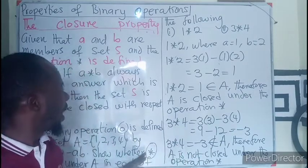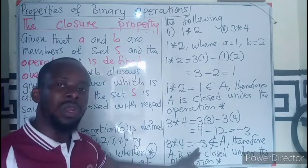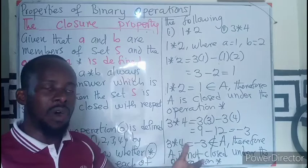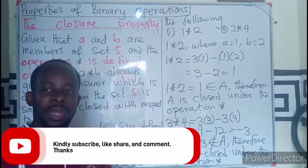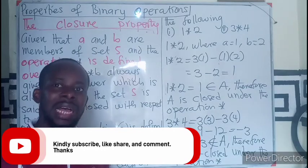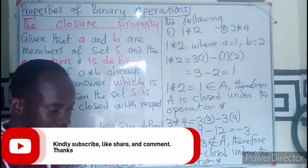because the elements we have are {1, 2, 3, 4}, which doesn't include a negative number. So a closure of a set is just to show that when you operate your operator, you must get an answer which is also an element of the given set.